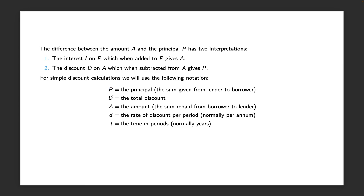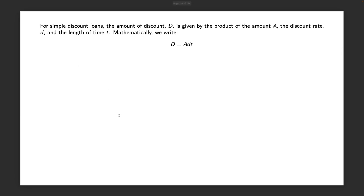Again we still have the principle P. Here we've got this new concept called the discount D, sort of equivalent to the interest I. We've still got the amount A, and we've still got our time T, but now we're going to have this concept of the discount rate d instead of the interest rate R. For simple discount loans, the amount of discount D is given by the product of the amount, the discount rate d, and the length of time T. Mathematically we write D = A·d·T.